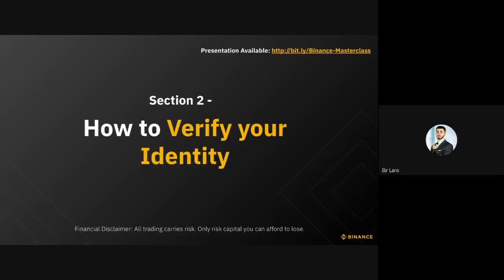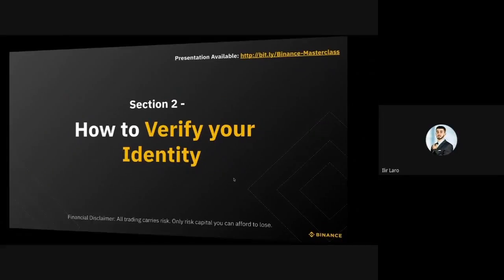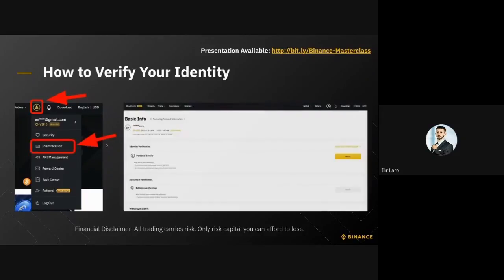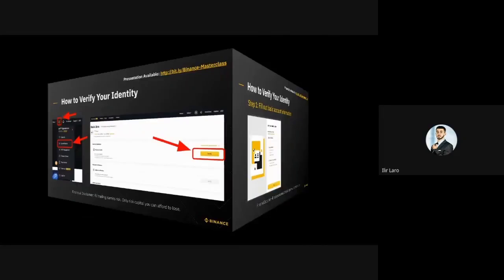To actually verify your identity on Binance, it's really simple. You can find it by going on the home page, going on the navigation bar, clicking on this icon — that's your profile icon — and then clicking 'Identification'. You'll then be directed to the identification page, which you can see on the right, and then you just click on 'Verify'. It's as simple as that.